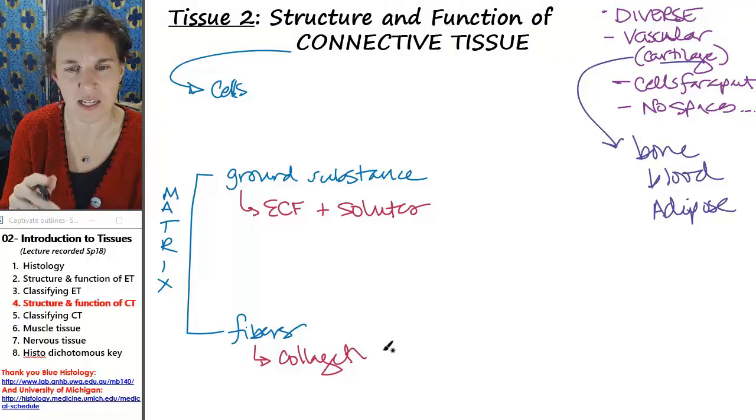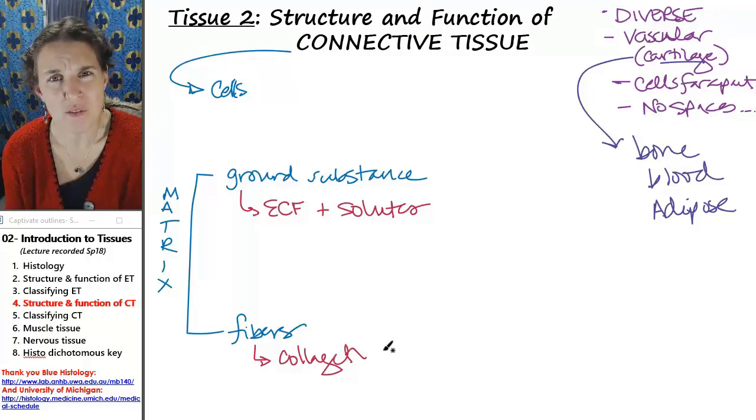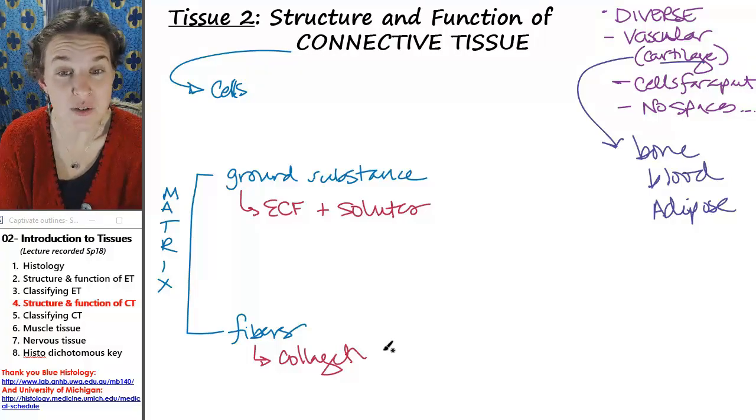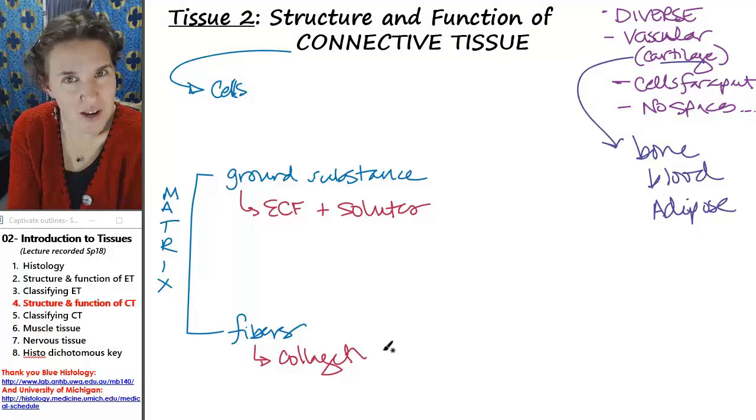The nature of the matrix is going to tell you the characteristics of the tissue. So think about that for a second. Think about bone versus blood. Both of them are connective tissues. Both of them have a matrix of ground substance and fibers.